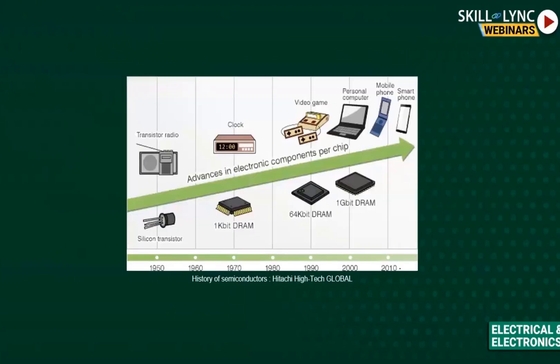Looking at the history of the semiconductor industry: in 1950, we had the silicon transistor and the transistor radio, which was a very large device. In the 1960s and 1970s, there was advancement and we moved to DRAMs. Then in the 1980s and 1990s, we moved to 64-bit DRAMs and one gigabit DRAMs, which brought us video games and personal computers.